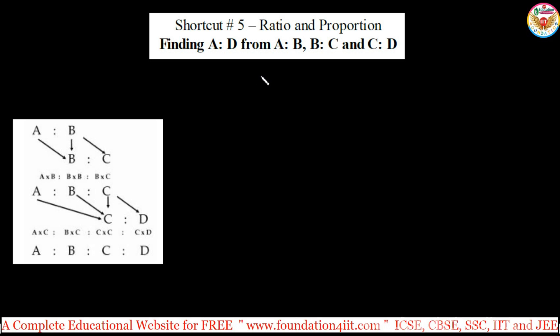For example, take the question A:B equals 2:3, and B:C is given 4:5, and say C:D, third one, this is 1:3.